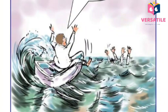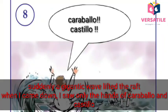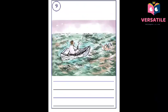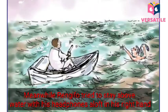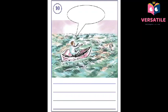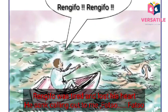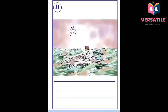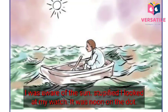Picture number eight: 'Suddenly a gigantic wave lifted the raft. When I came down, I saw only the hands of Carabello and Castillo.' Picture number nine: 'Meanwhile, Rangifo tried to stay above water and held his shoes aloft in his right hand.' Picture number ten: 'Rangifo was tired and lost heart. He kept calling out to me — Fatso, Fatso.' Picture number eleven: 'I was aware of the sun. Stupefied, I looked at my watch. It was noon on the dot.'